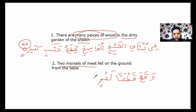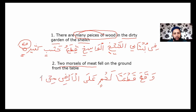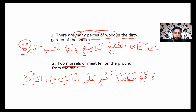On the ground from the table. 'On' can be translated as على, and ground is الأرض, so على الأرض. From the table — المائدة especially refers to a dining table. So the full sentence: وقع قطعتا لحم على الأرض من المائدة — two pieces of meat fell on the ground from the table.